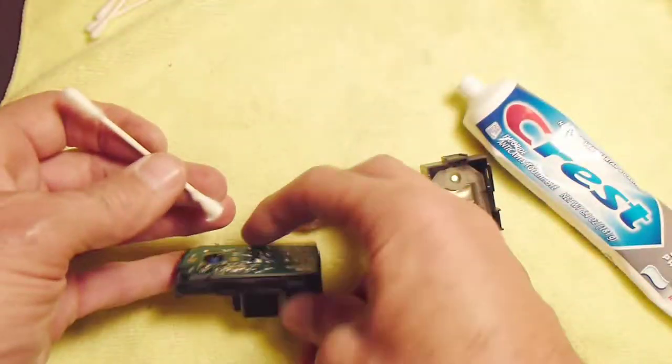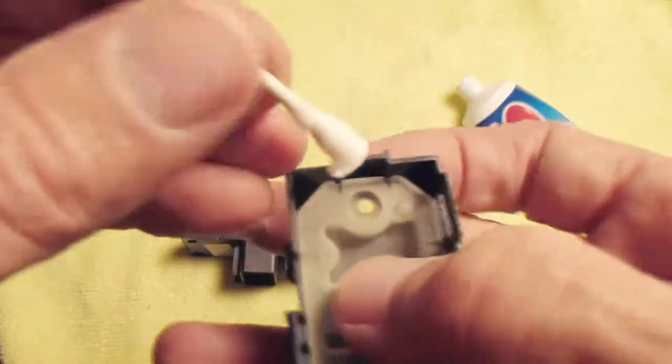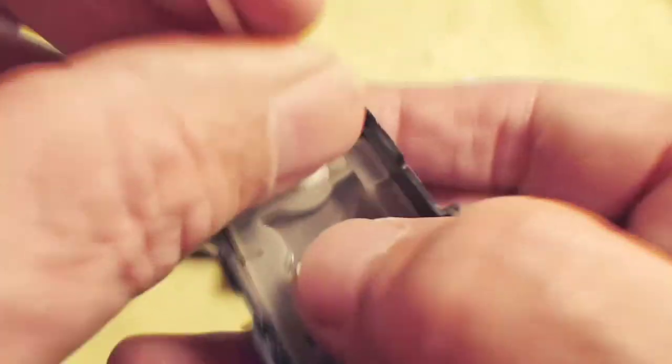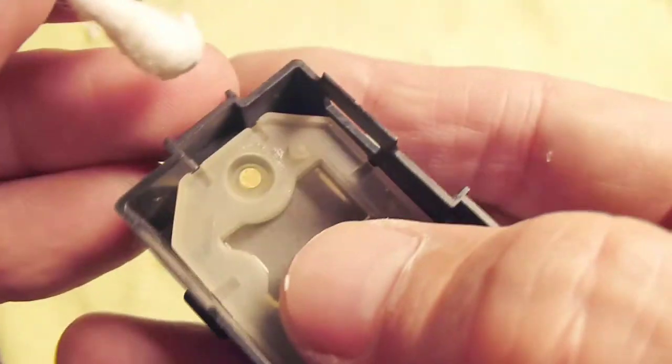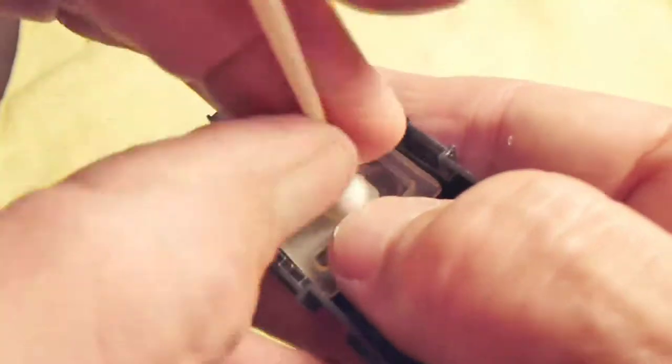And once you're done with that, you can go ahead and do the same thing with the switch contacts. The button contacts also have, you can see a lot of oxidation and whatever else is on there. So just go ahead and wipe that off with the Q-tip.